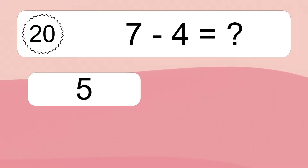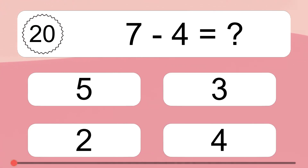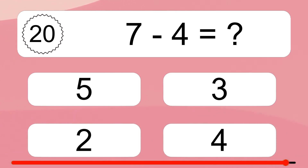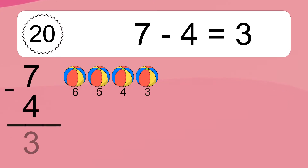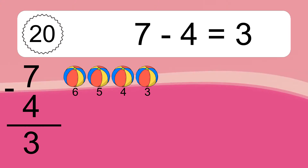7 minus 4 equals what? 7 minus 4 equals 3. Let's count it: 6, 5, 4, 3. Get ready. 1.